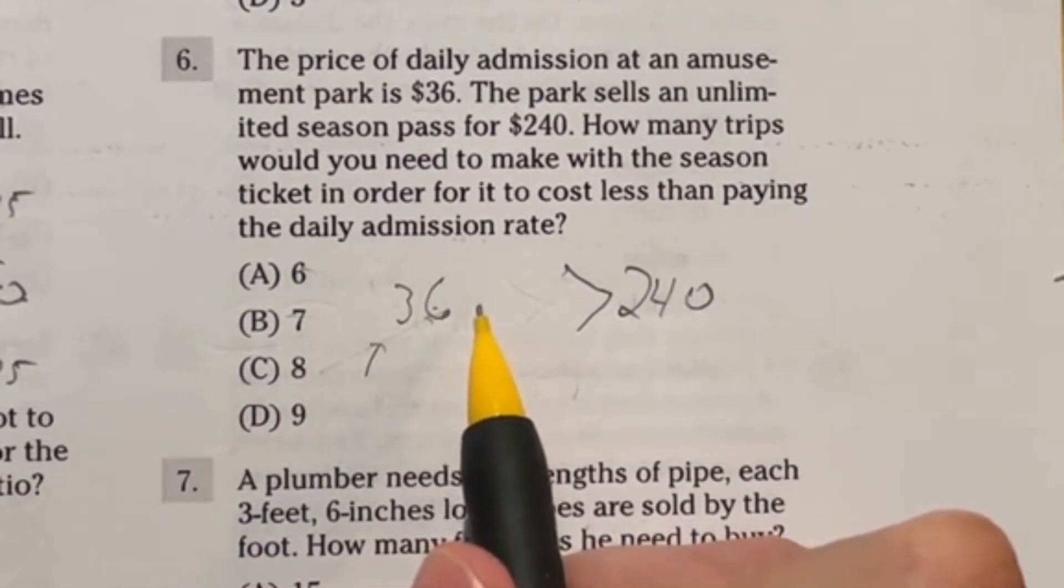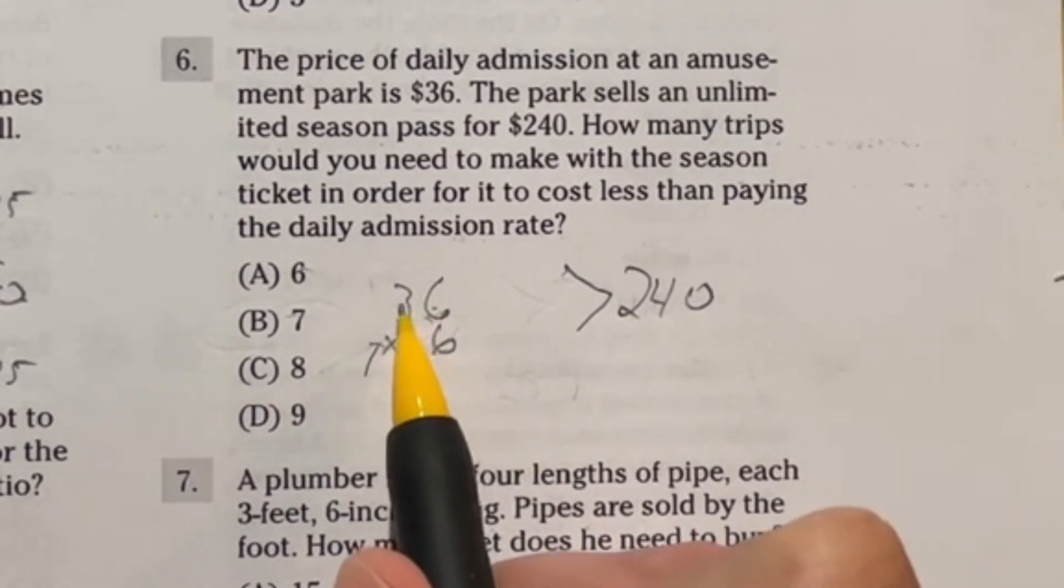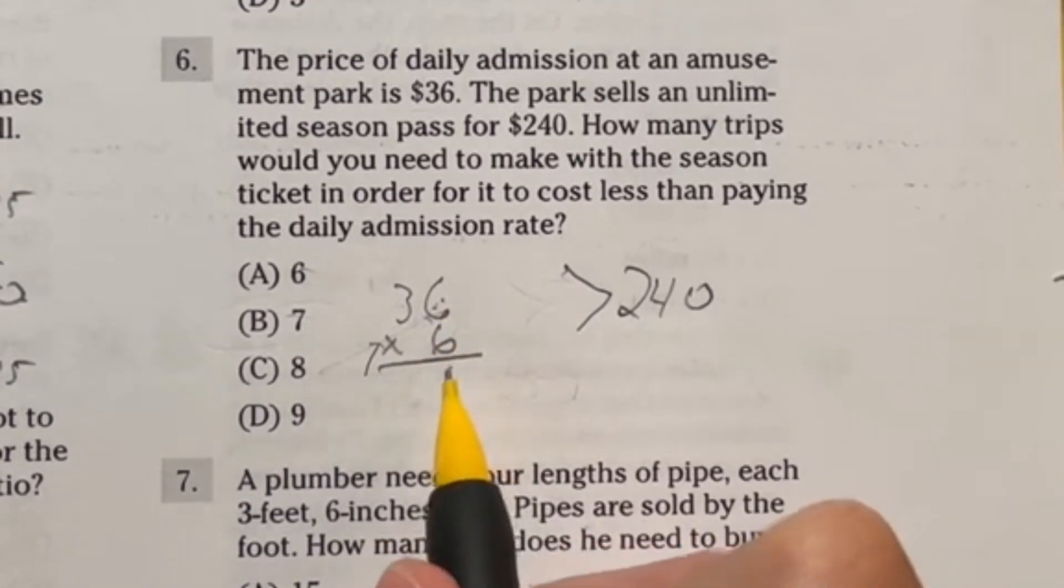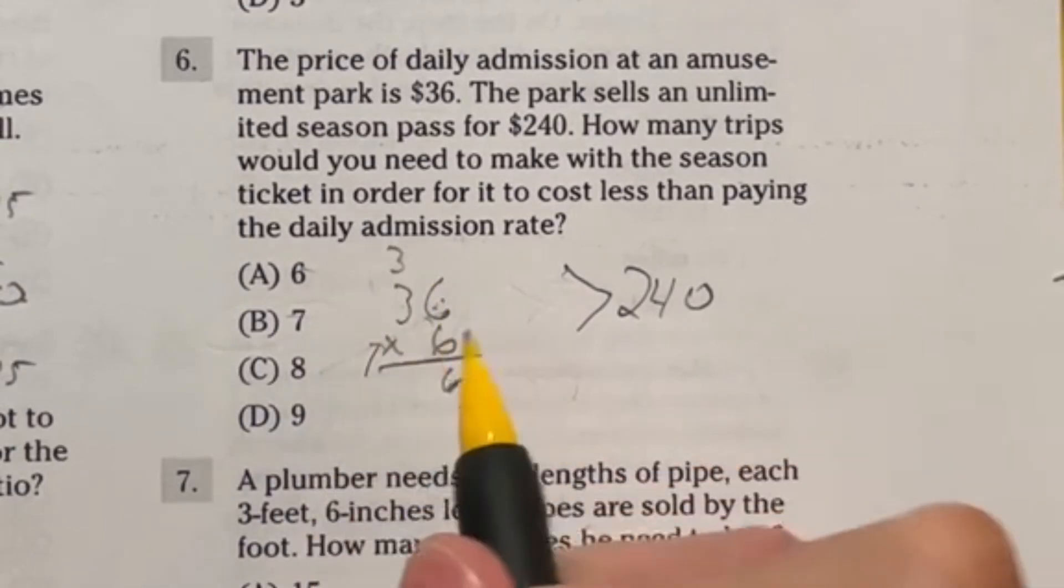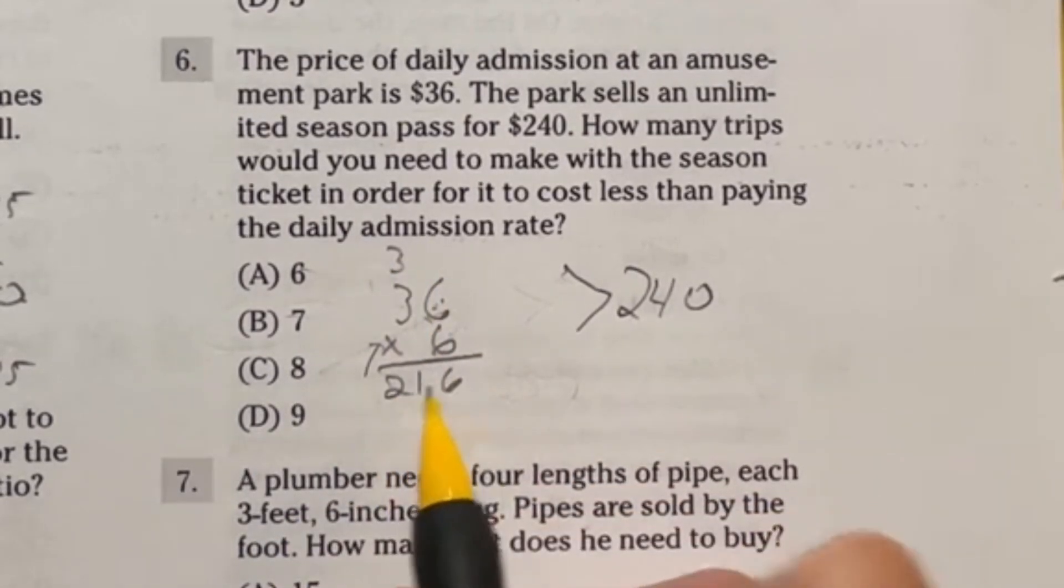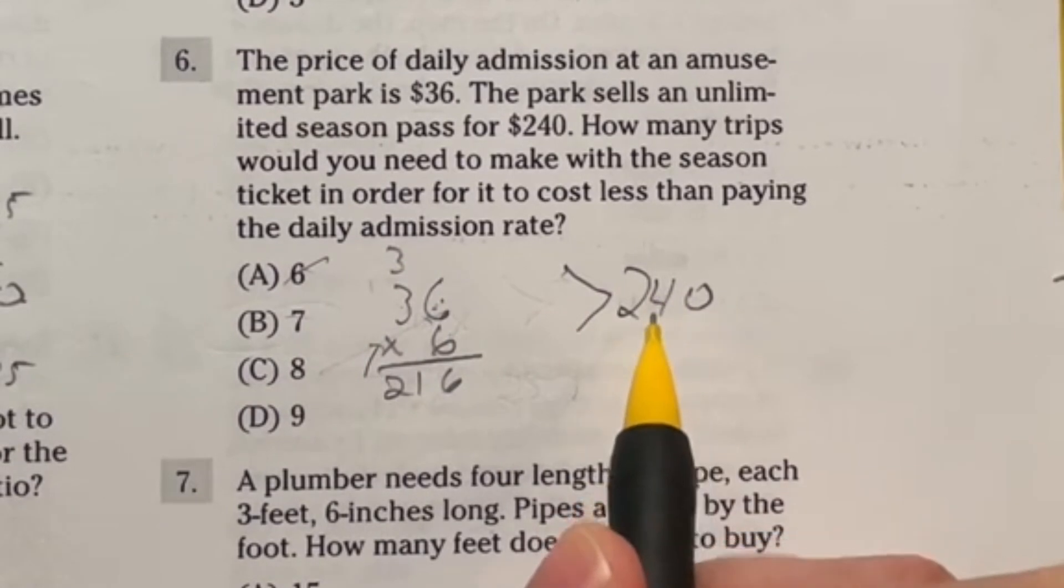So if I do 36, let's say I go to the park six times. That means I'm multiplying by six because we're doing 36 plus itself six times. So six times six is 36. Carry the three up there. Six times three is 18, then 19, 20, 21. So we got 216. That is not at 240. So I have not made it to that threshold yet.